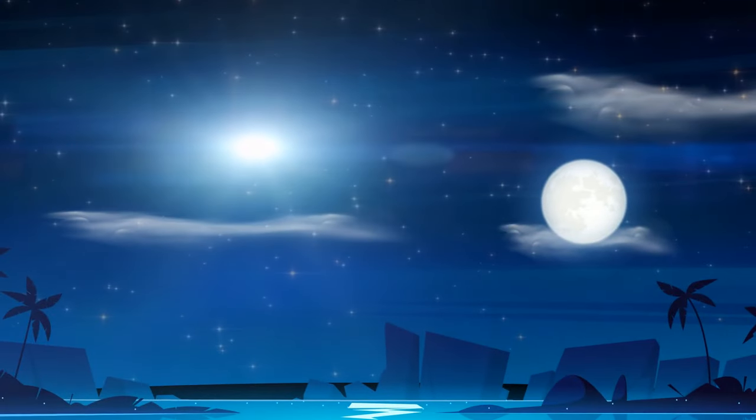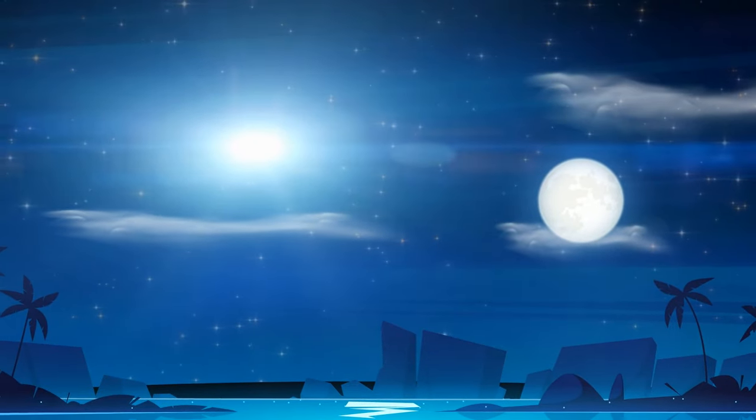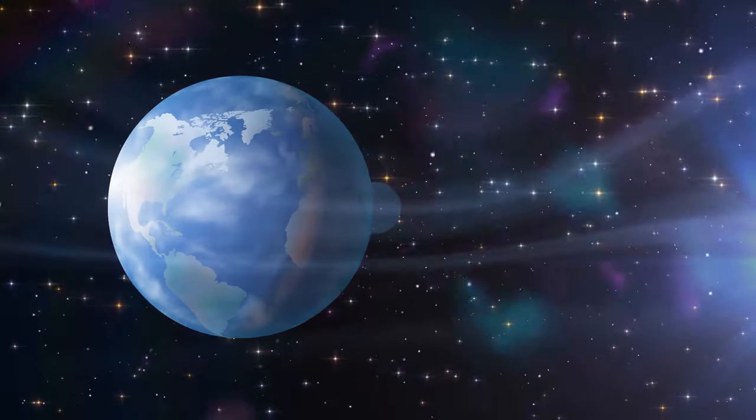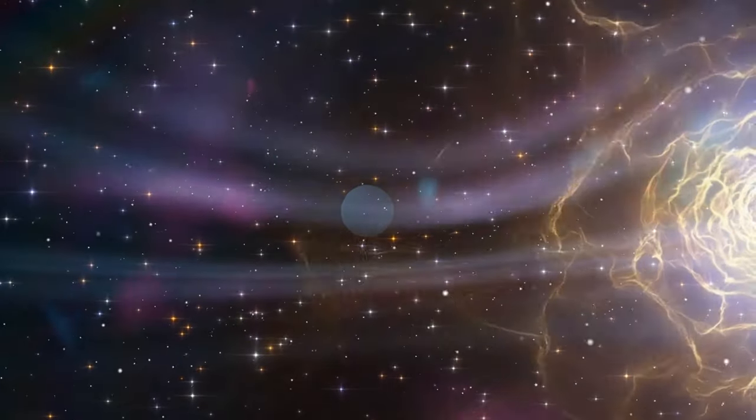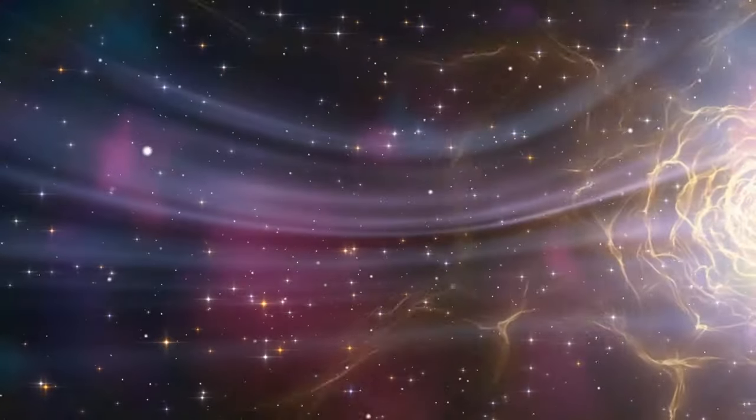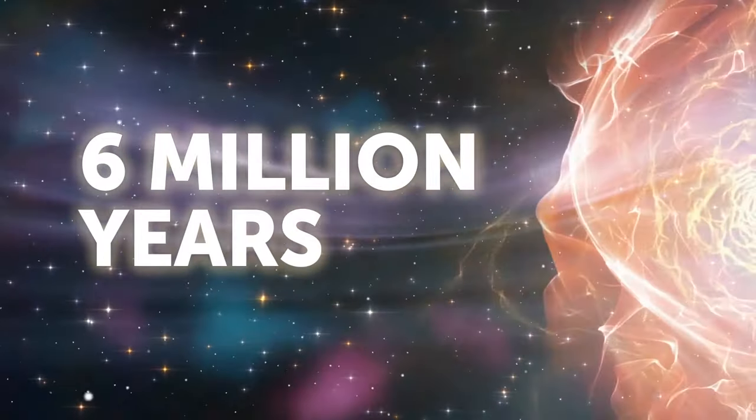A supernova explosion will be so blinding that Betelgeuse will shine brighter than the moon in the night sky. Luckily, Earth is too far away for this explosion to cause any harm to people. A strong stream of matter that will be ejected from the explosion site won't reach the solar system until six million years later.